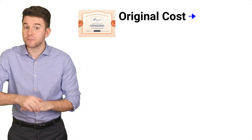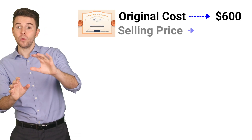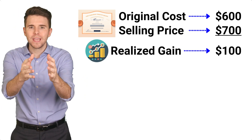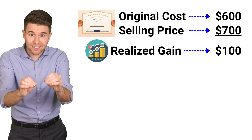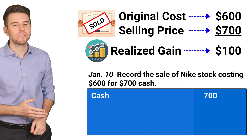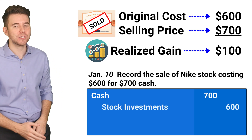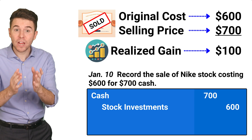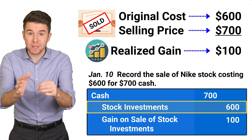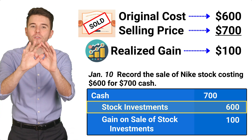Now, let's fast forward to January 10th of next year. We decide to sell some of the stock investment. The shares sold were originally purchased for $600 and are now sold for $700, resulting in a realized gain of $100. It is realized because those securities are now actually sold. We record this entry with a debit to cash for $700, a credit to stock investments for $600, and a credit to gain on sale of stock investments for $100. The credit to stock investments removes the cost of these shares from the balance sheet.